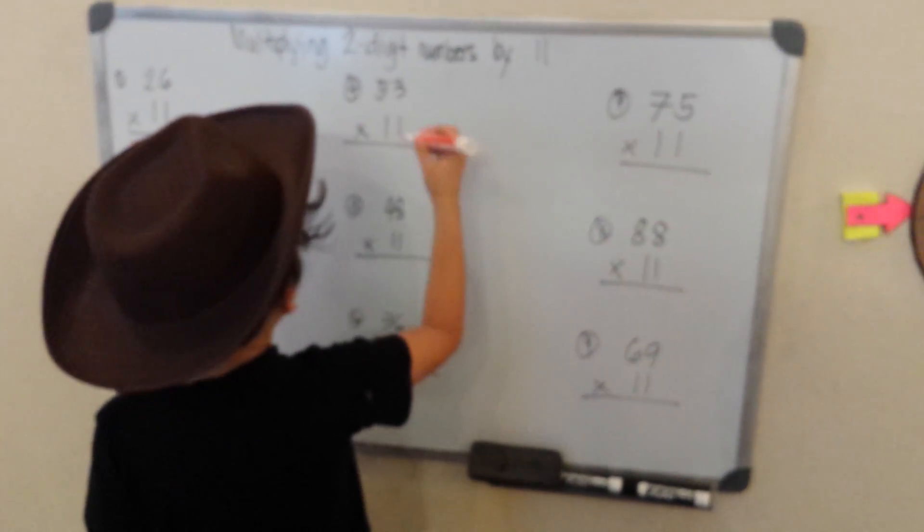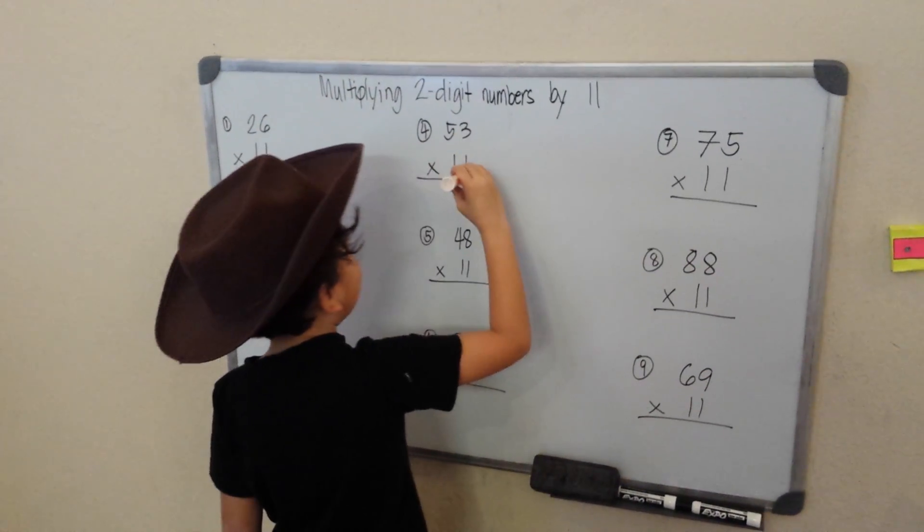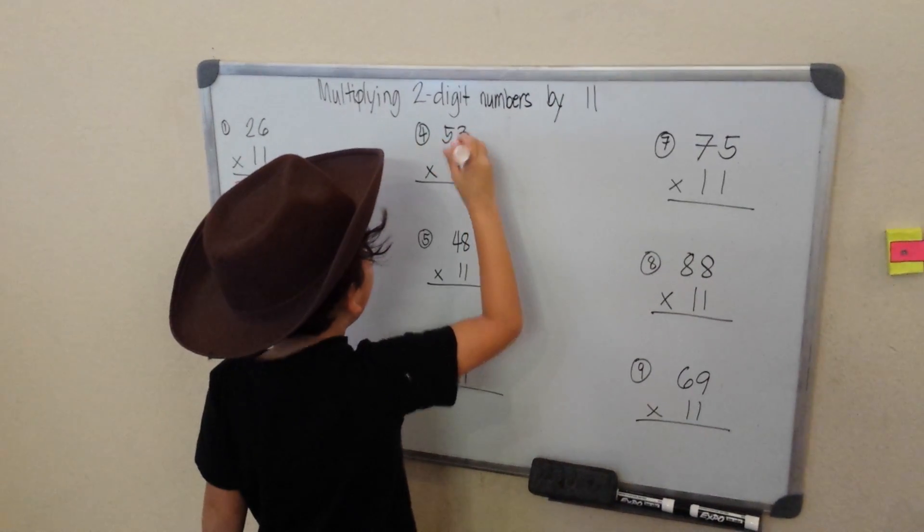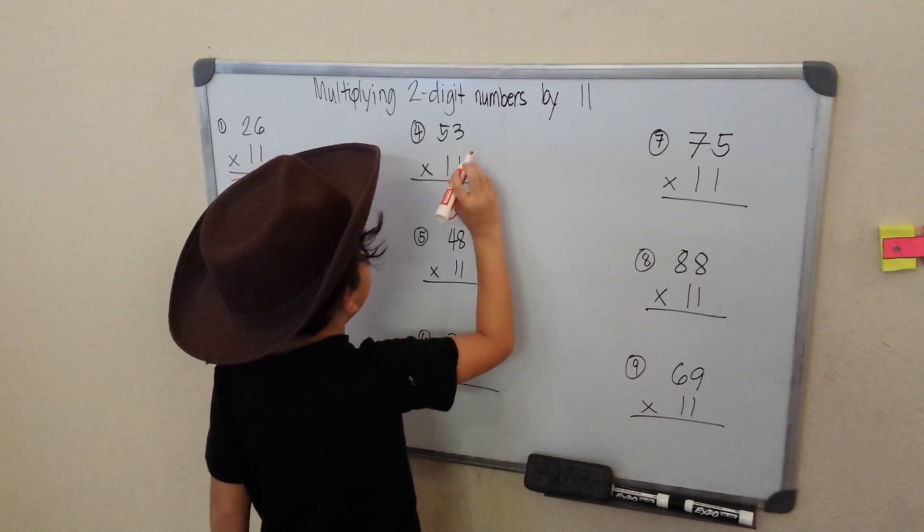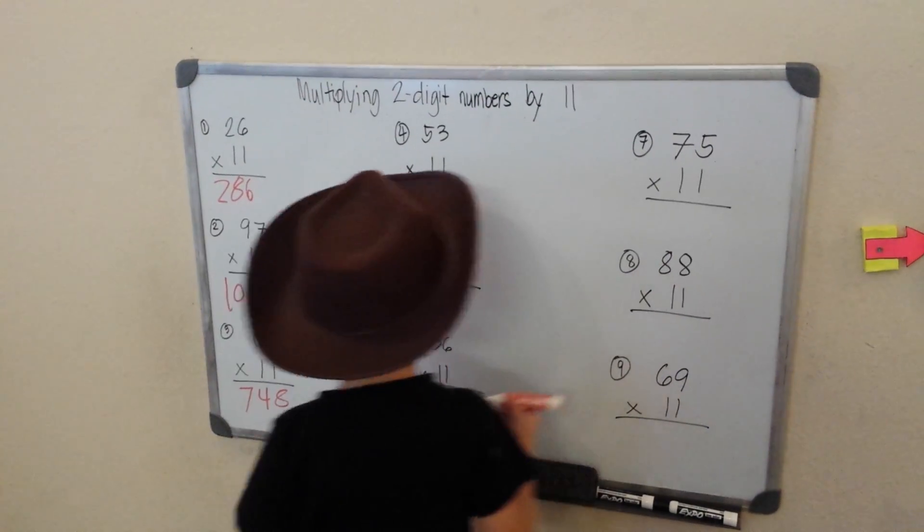53 times 11. Copy the 3. Okay. 5 plus 3, that will make 8. Then copy the 5. 583.